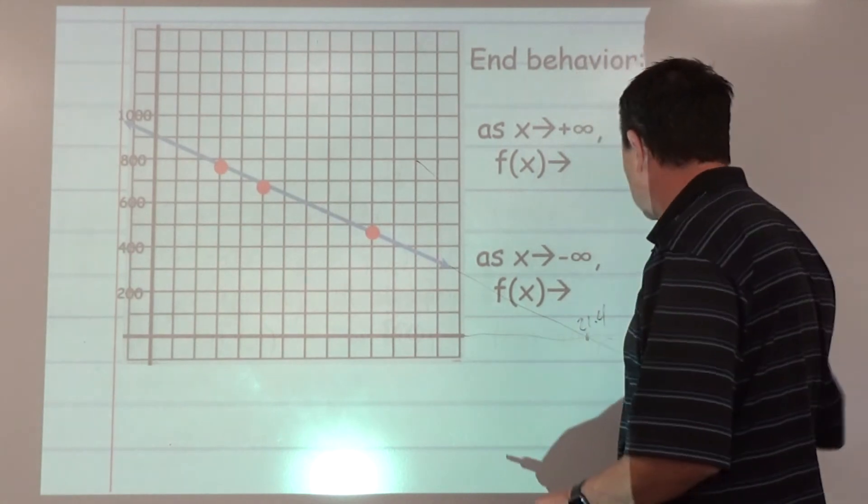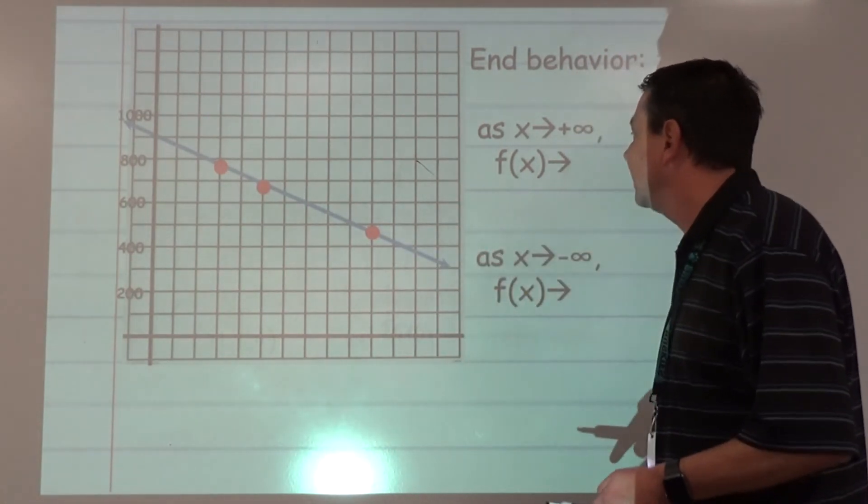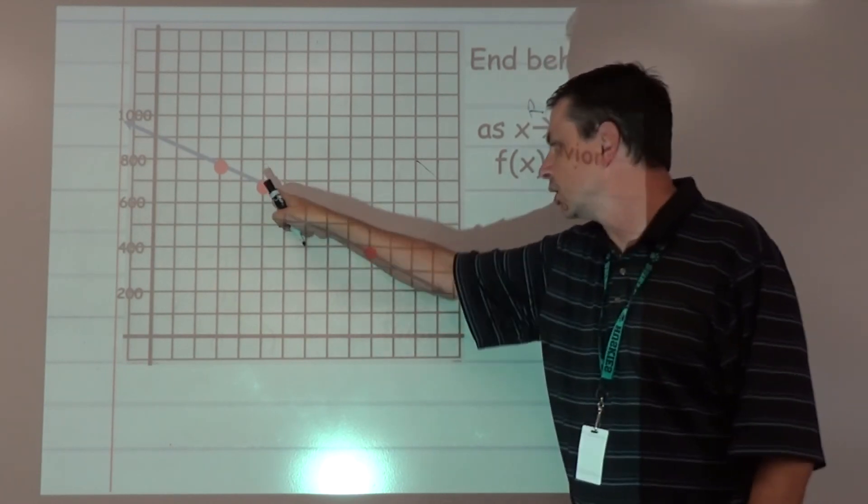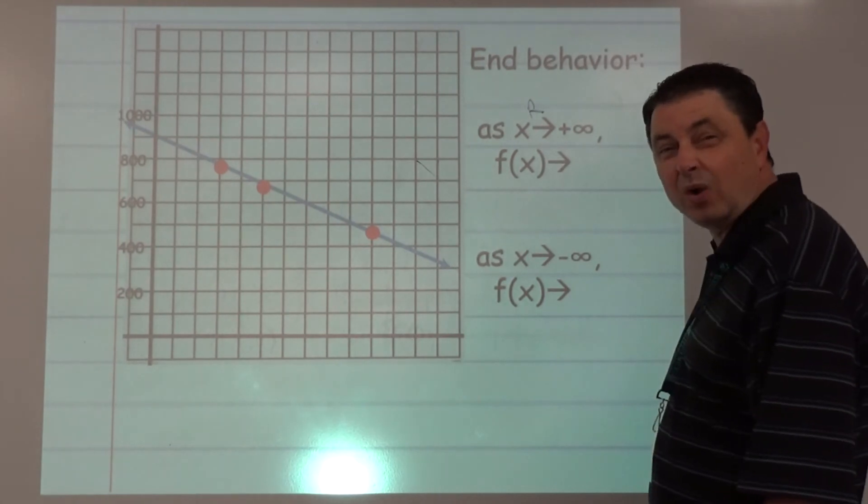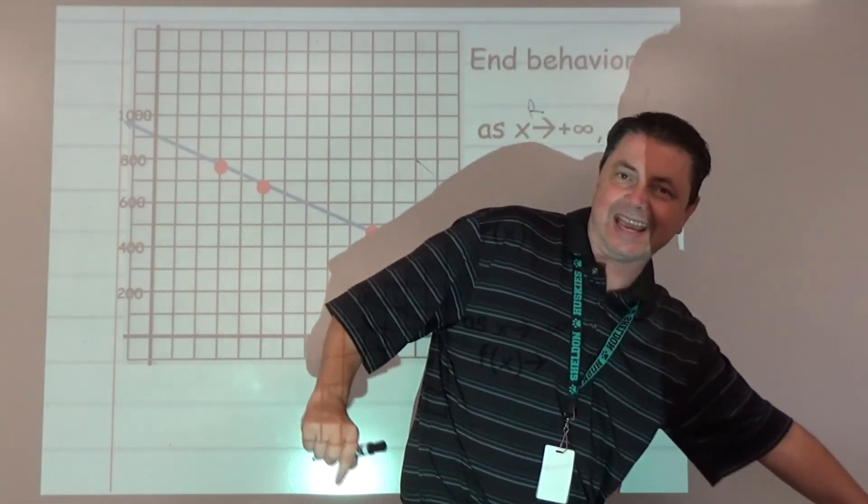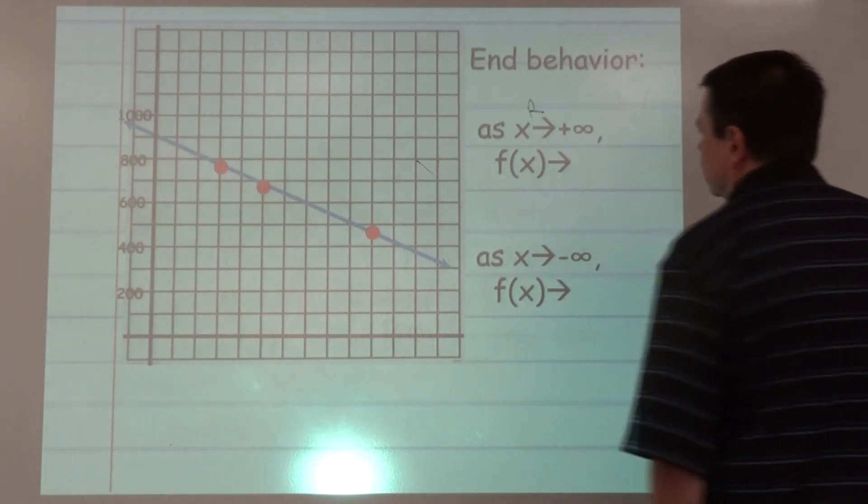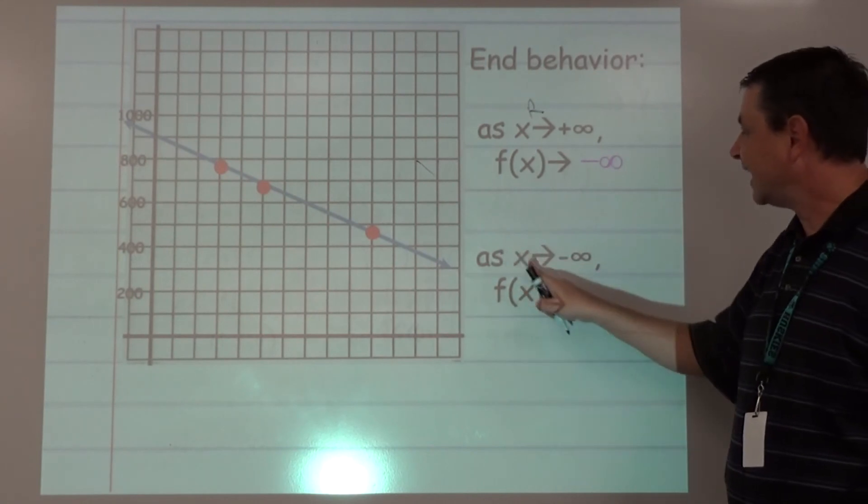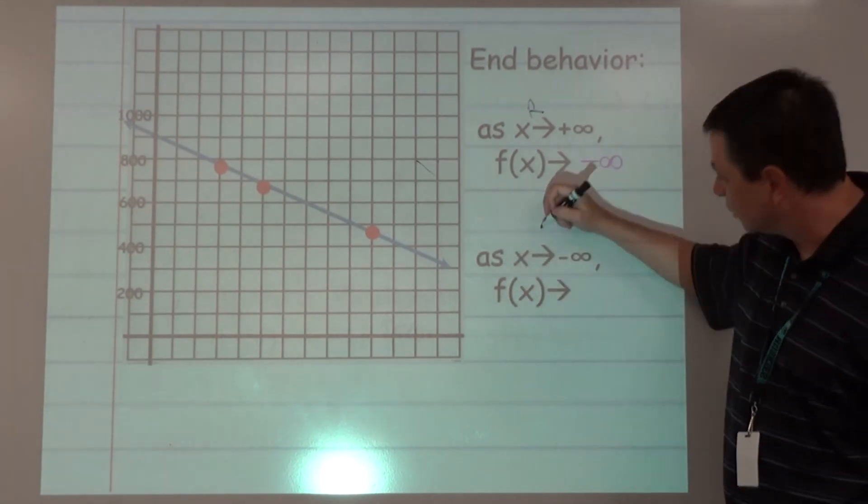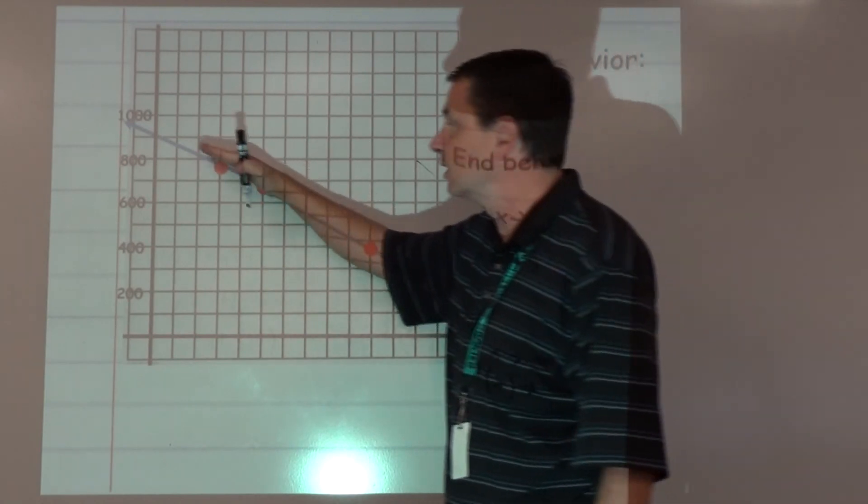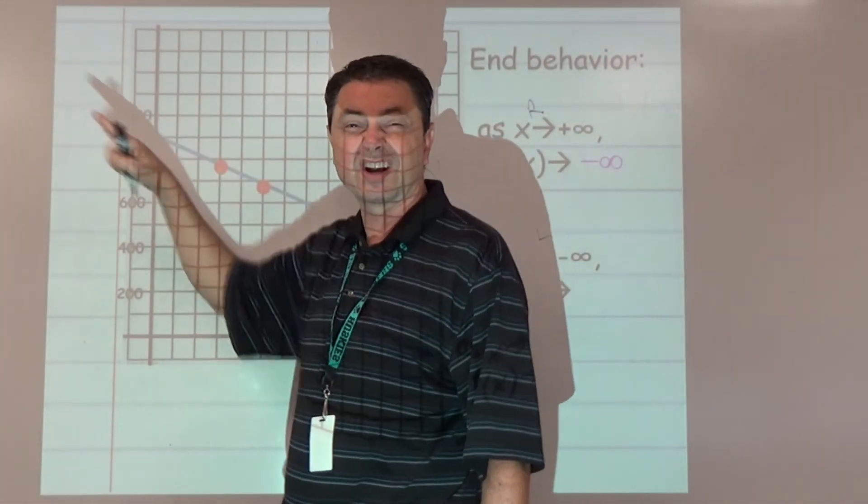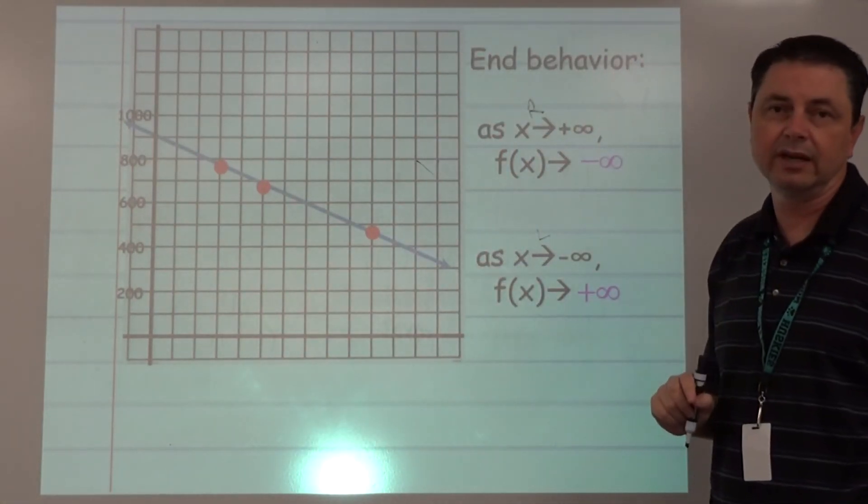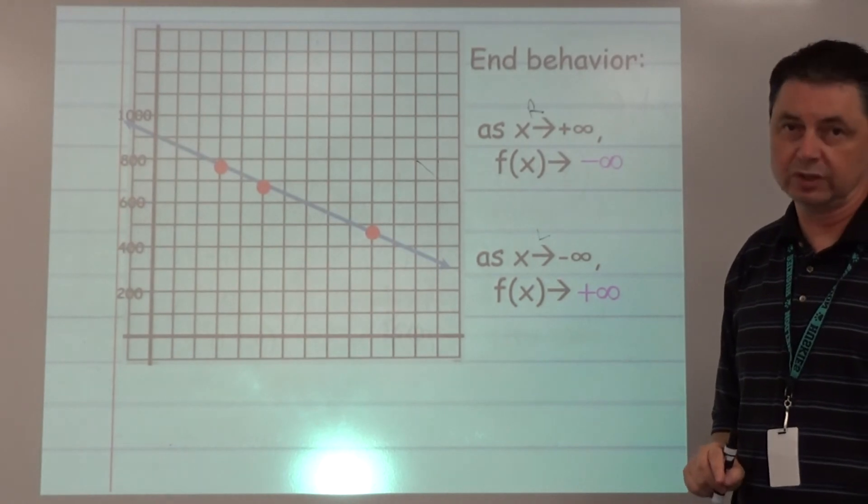Lastly, we'll look at end behavior. What's happening at these extremes? As x goes to infinity, which means goes right forever, what's happening to the y values? They're going down forever, so we would say this one's heading towards negative infinity. As x goes towards negative infinity, which means as you go left on the graph, where are the y coordinates going? You're going up forever, so that's going to be positive infinity. That's it for today. See you next time.